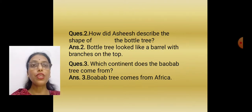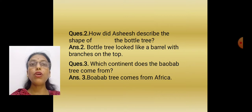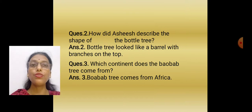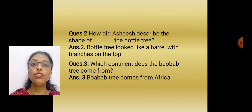Question 2: How did Ashish describe the shape of the bottle tree? Remember the image of the bottle tree — it looked as though there is a barrel at the bottom and there are branches making a crown. So the answer is: the bottle tree looked like a barrel with branches on the top.